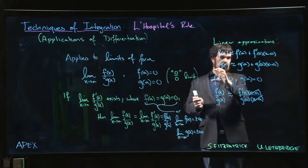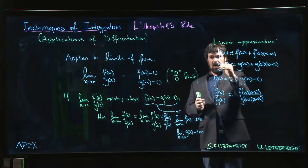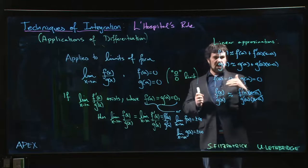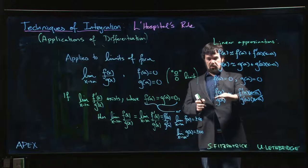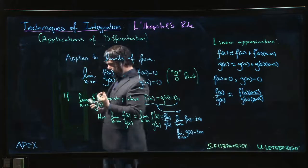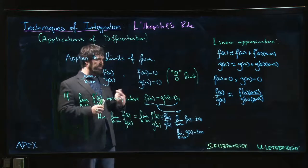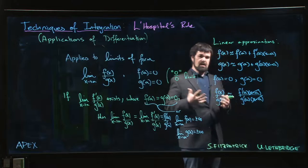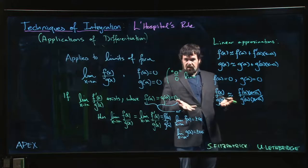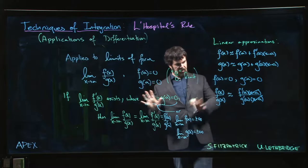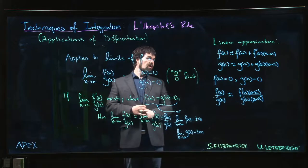Now there are a number of flaws in this argument. The size of delta f for a given delta x could be very different for f and for g. Just because we have a linear approximation for f and a linear approximation for g doesn't mean we still have a good approximation when we pass to the ratio, because if those approximations are on different scales, maybe this is not a good approximation. The mean value theorem approach takes care of those details and puts us on solid footing.